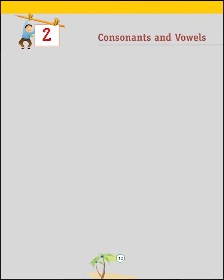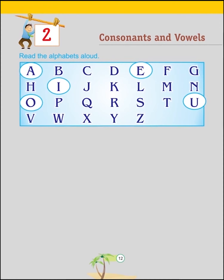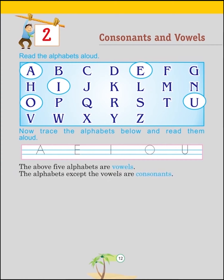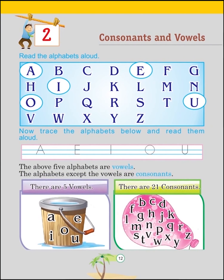Chapter 2: Consonants and Vowels. Read the alphabets aloud: A, E, I, O, U. Now trace the alphabets below and read them aloud. The above 5 alphabets are vowels. The alphabets except the vowels are consonants. There are 5 vowels: A, E, I, O, U. There are 21 consonants.